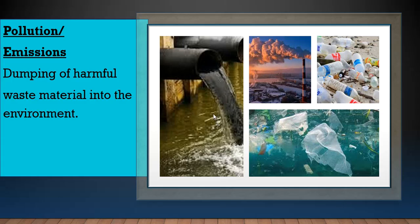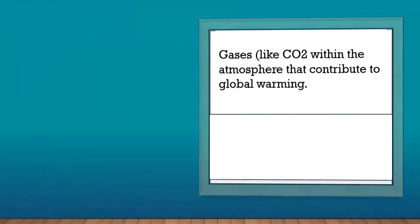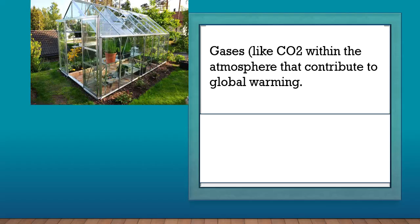Pollution, sometimes called emissions, is the dumping of harmful waste material into the environment. We can see water pollution where harmful substances are dumped into water. There's also air pollution, and we can see more water pollution here — plastic being dumped near the ocean. All these are forms of pollution or emissions.